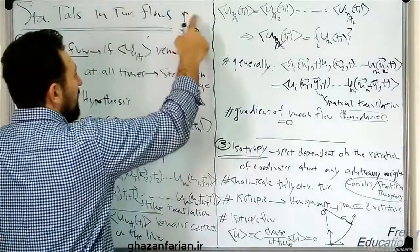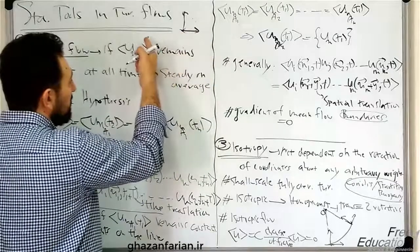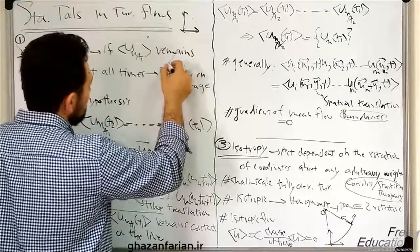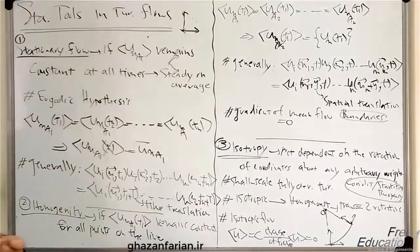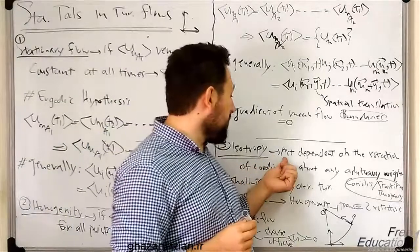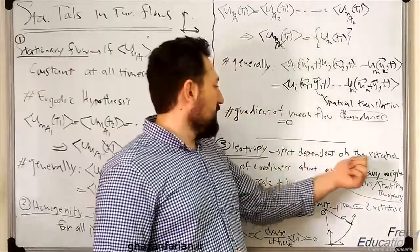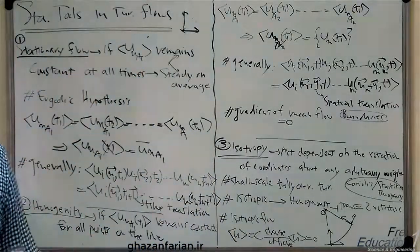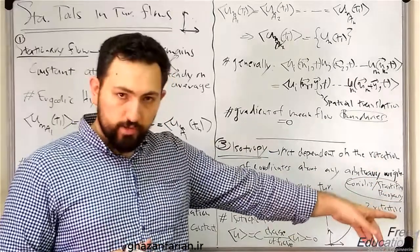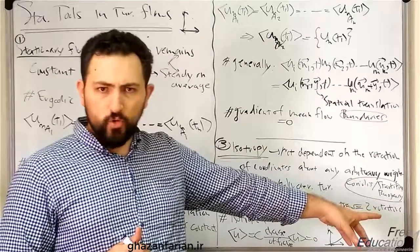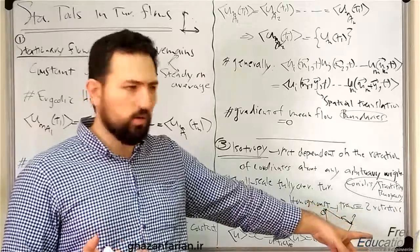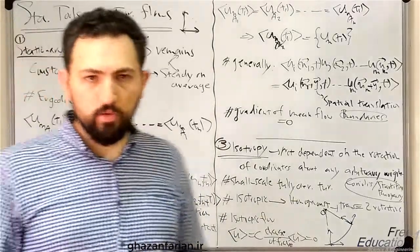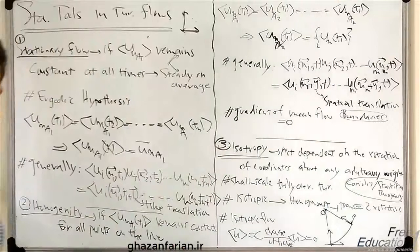The important point here is that the rotation may be about another point. So you have this coordinate initially, and if you rotate this coordinate with respect to this other origin, we have something like this — schematically, of course. The properties should remain constant with respect to the rotation of the coordinates about any arbitrary origin. For example, if you have Coriolis effects or acceleration in the flow, or in buoyancy-driven or stratified flows, we don't have isotropic turbulence.